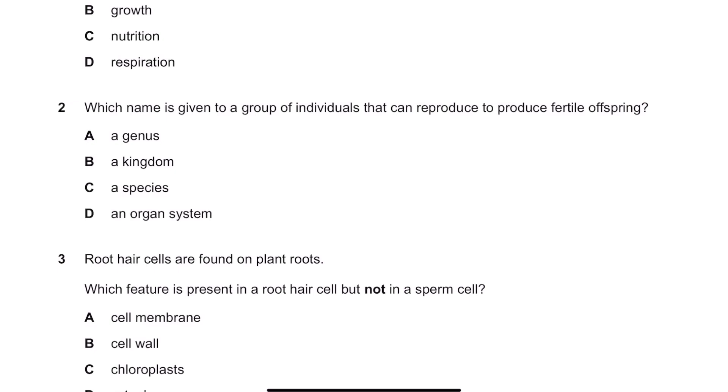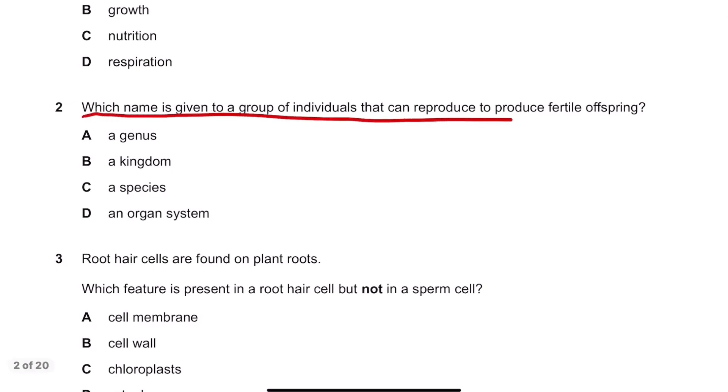Number two, which name is given to a group of individuals that can reproduce to produce fertile offspring? A group of individuals, so we're only looking at the single organisms here, and it says they can reproduce to produce a fertile offspring.